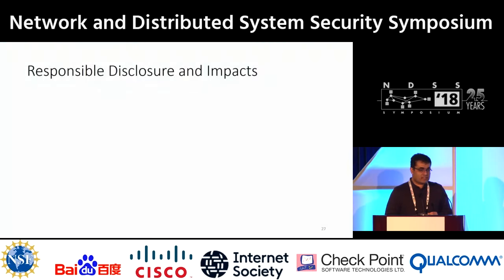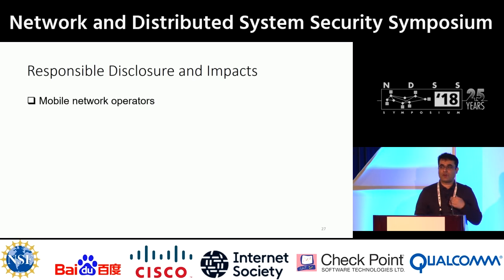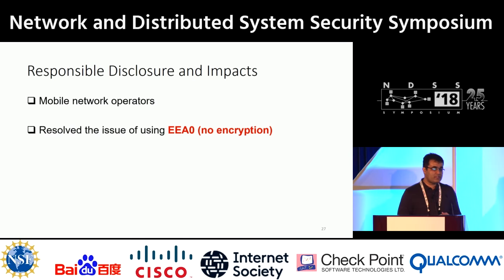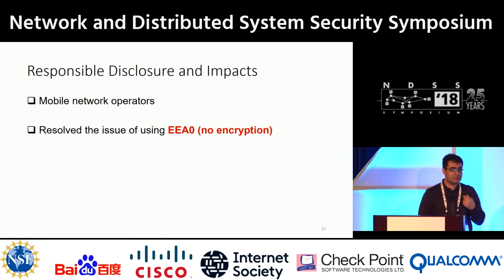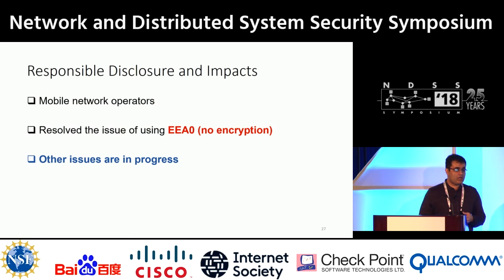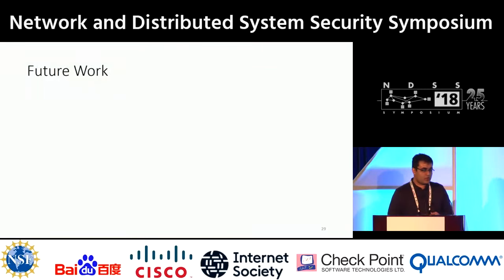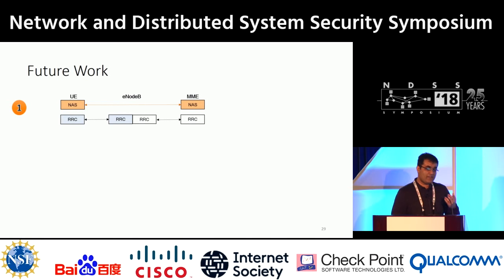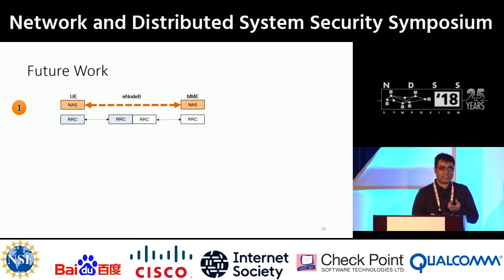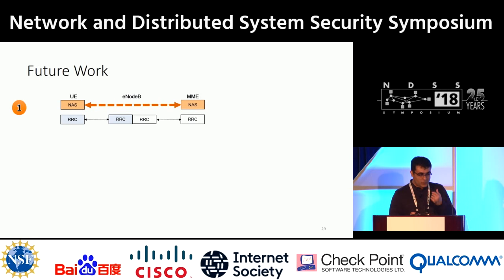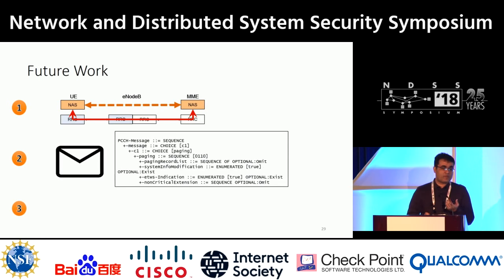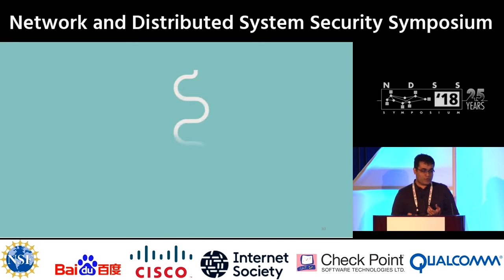Regarding responsible disclosure, we have contacted mobile network operators. One issue found was that one operator did not use any encryption for control plane protocol messages. That issue has been resolved with them, and other issues are still in progress. We have so far analyzed NAS UE-to-MME protocol interactions; we would like to also analyze the RRC layer protocol interactions, incorporate message data, and finally propose solutions.